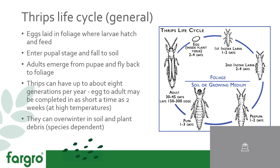The first place to start when thinking about controlling a pest is actually understanding the pest you're dealing with. Their general life cycle is that eggs are laid in foliage where larvae will hatch and feed. Depending on the specific type of thrips, there will be different areas they prefer to lay their eggs. This larval damage causes that silver speckling mentioned previously, and also discoloration in flowers and fruit. Once the larvae have eaten enough and sufficiently developed, they enter the pupal stage where they fall off the plant to the soil, and they won't feed in the soil — they'll just develop into adults.